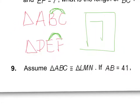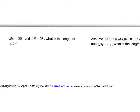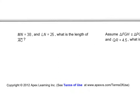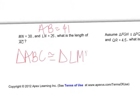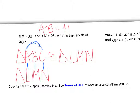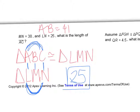Number nine: assume that triangle ABC is congruent to triangle LMN. We know AB is 41, MN is 38, and LN is 25. What is the length of AC? Writing them on top of each other — triangle ABC and triangle LMN — A and L correspond, B and M correspond, and C and N correspond. AC is the first and last letters, so it has to be the same as LN, and we knew LN was 25. So our answer is 25.